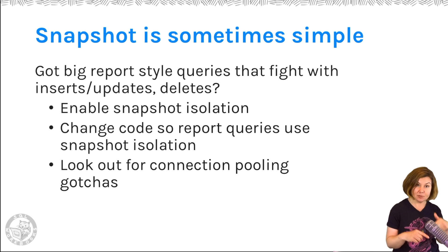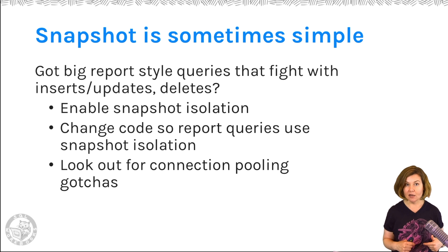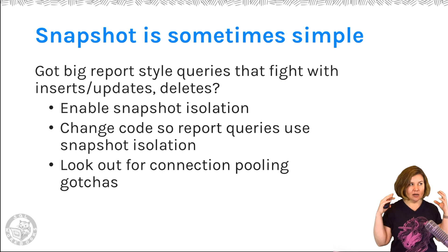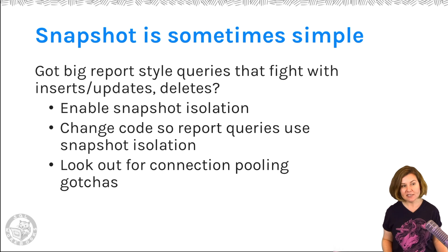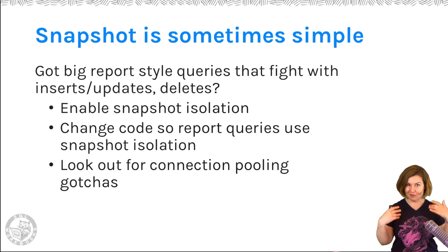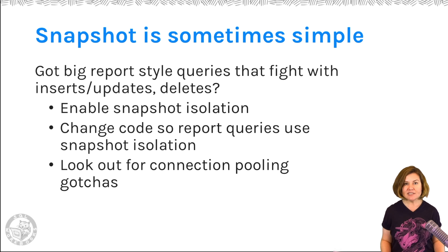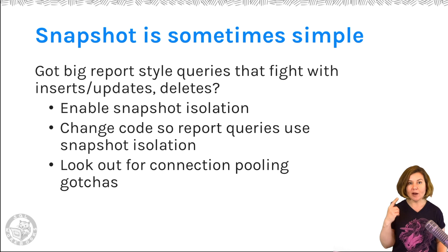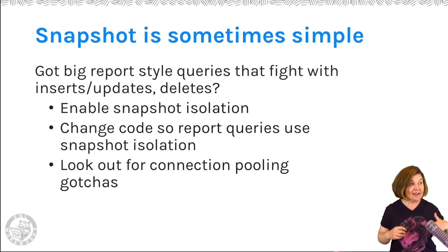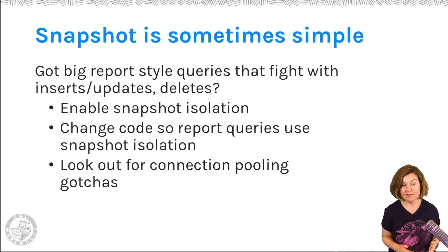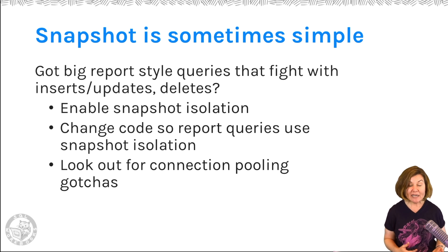If there are just a few parts of my application that are read-based and I really just want these reports to not get blocked, snapshot isolation can help with that. If they're important enough to warrant doing versioning for all our changes, we can say: you're not going to block writes, writes aren't going to block you, and you're going to get a consistent set of data — even consistent at the transaction level, if we're doing a begin tran and running multiple statements.